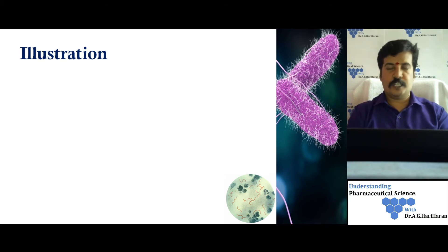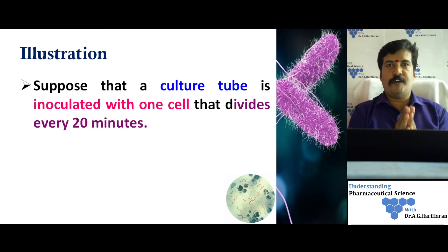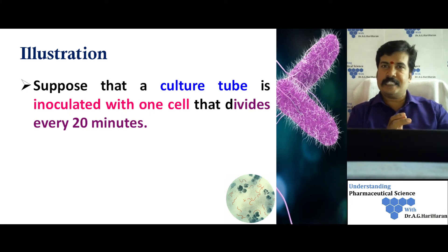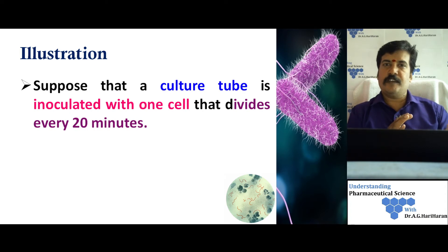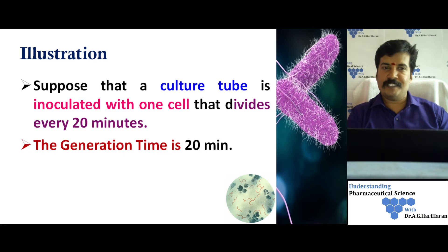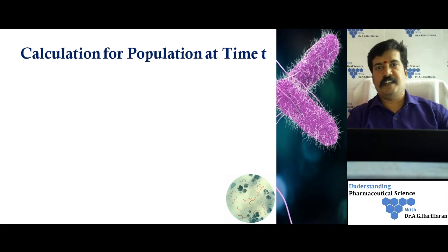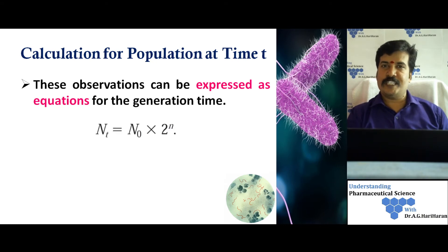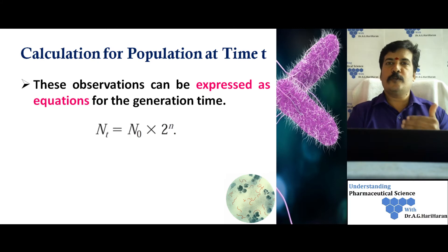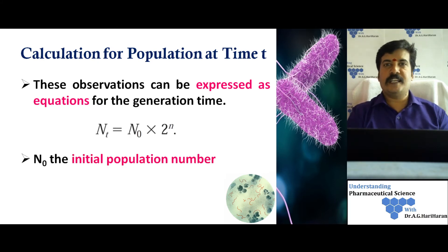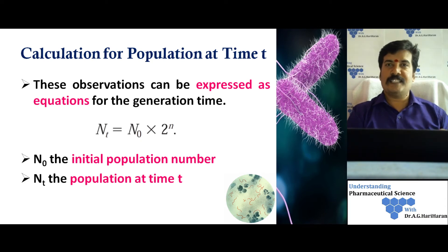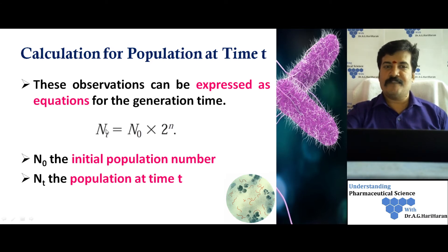To illustrate this with a hypothetical case: we take a culture tube containing sterile media and add a single microorganism. This bacterium divides every 20 minutes, so the generation time is 20 minutes. The number of cells at any time can be calculated using the equation: Nt = N0 × 2^n, where N0 is the initial population (here, 1 cell), Nt is the number of cells after a given time, and n is the number of generations.